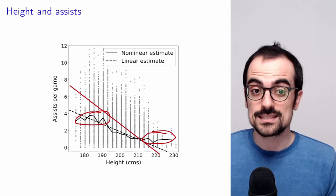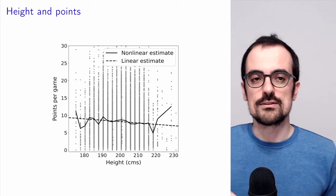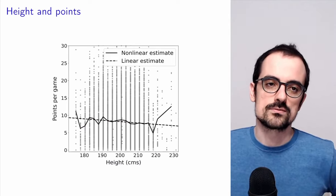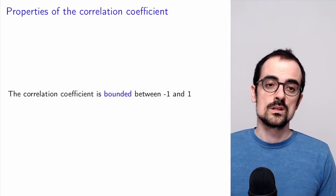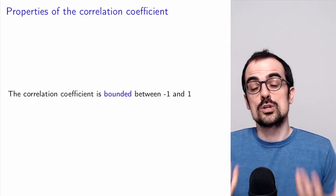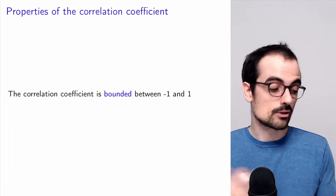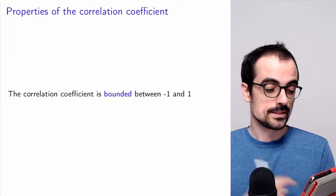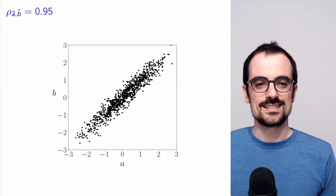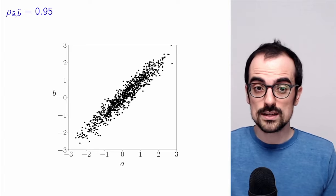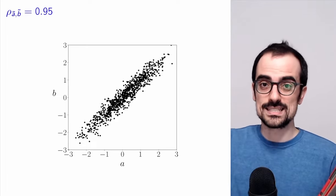The dashed black line is the best possible line, but it cannot account for nonlinear structure. So there is a trade-off between the nonlinear and linear estimates. Now let's talk about properties of the correlation coefficient. We already mentioned them when discussing the geometric perspective: the correlation coefficient is always bounded between minus one and one. If it equals plus one or minus one, it means there is complete linear dependence — the scatter plot of two quantities with correlation close to one will show points nearly exactly on a line, meaning one is a linear function of the other.